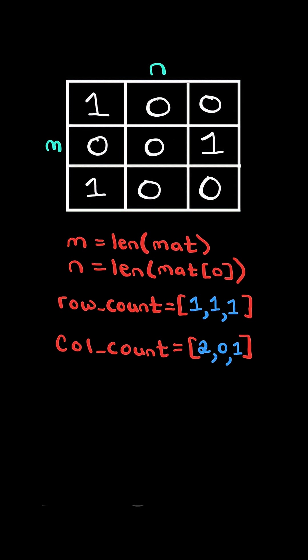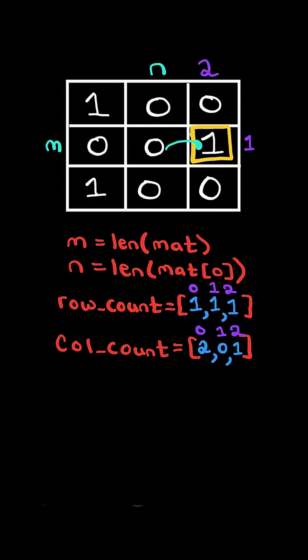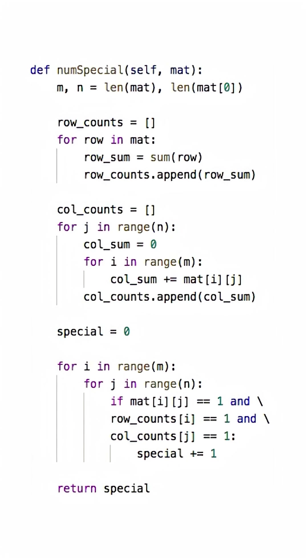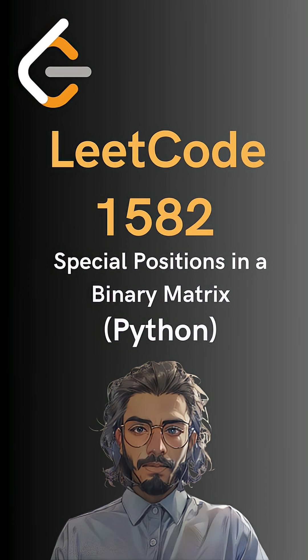Once we have the row and column counts, we iterate through each position in the matrix. If the value equals 1, and we index into the row count and its sum equals 1, and we index into the column count and its sum equals 1, then it is a special position, so we increment a counter. Here is the code to do so. Please follow for more.